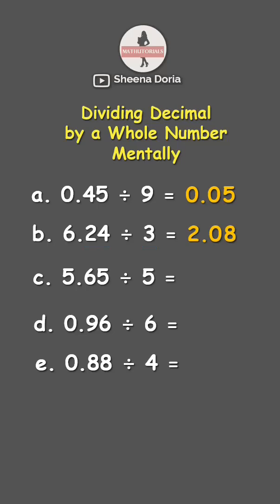Next, we have 5.65 divided by 5. First, 5 divided by 5 is 1, so let's copy the decimal point. Next, 6 divided by 5 is 1, which has a remainder of 1. Let's write the remainder here.